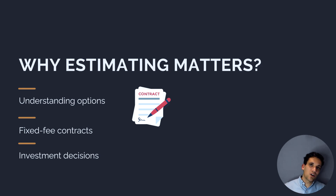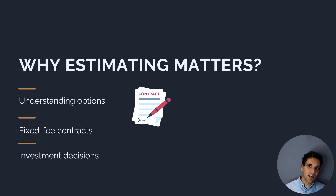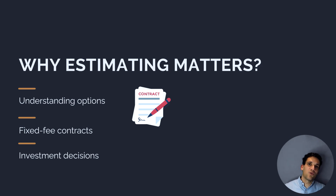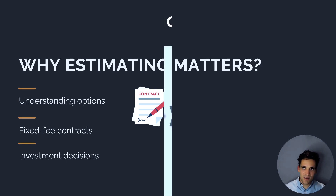Construction projects always involve the transfer of risk and responsibility. In fixed fee lump sum contracts, as a general contractor, we'll quote to a client to deliver works for a fixed fee — to do that effectively, we need to estimate the costs. And finally, estimating helps inform investment decisions: we look at the value delivered by a project compared to the costs, estimate each of these, and determine whether a project is going to make sense to invest in.